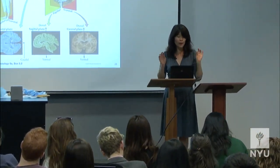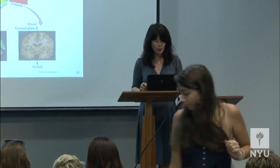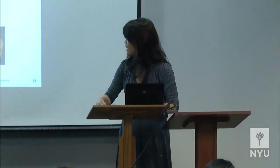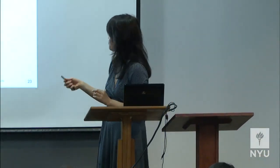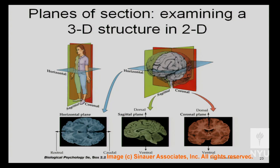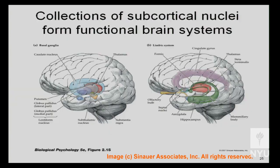We just went over the planes of sections: horizontal plane, sagittal plane — shown here with a great view of the corpus callosum — and coronal plane.